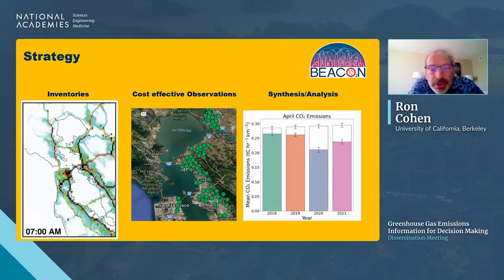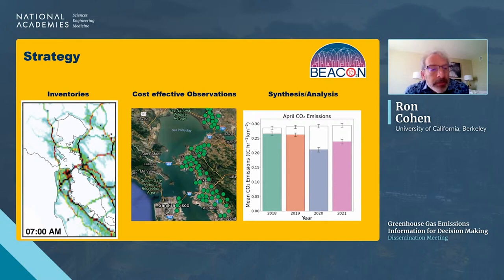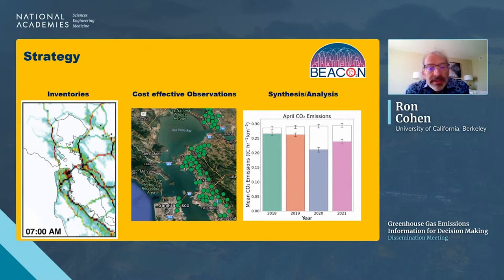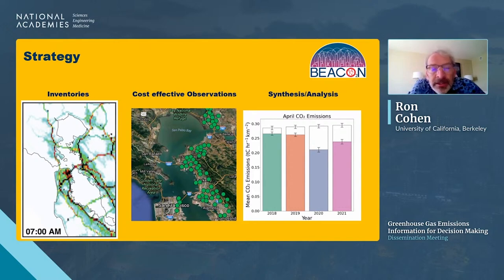Our instrument is called BEACON — the Berkeley Environment Air Quality and CO₂ Network. The approach combines an emission inventory showing all sources (roads, point sources) with a set of observations at measurement sites across the San Francisco Bay Area, then synthesizes the two to show how the combination tells you something different from the inventory alone — shown as four Aprils with white bars representing the prior and colored bars showing differences from that prior.